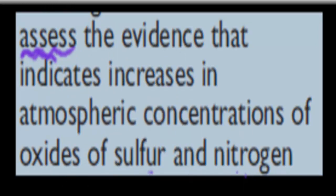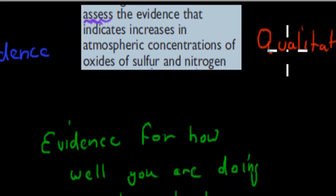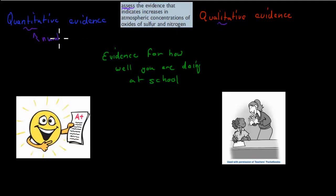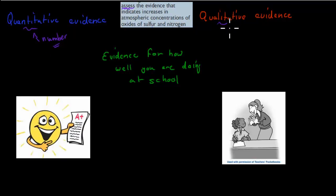Before we start, I want to quickly go over what qualitative and what quantitative evidence is, because we're going to go over both in this video. Quantitative refers to numbers — so if you give statistics or any number-based evidence when it comes to what we're looking for, in this case the increase in concentration.